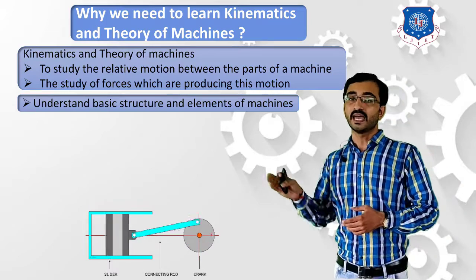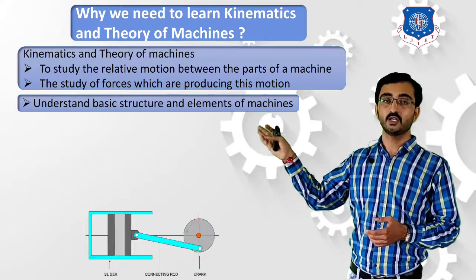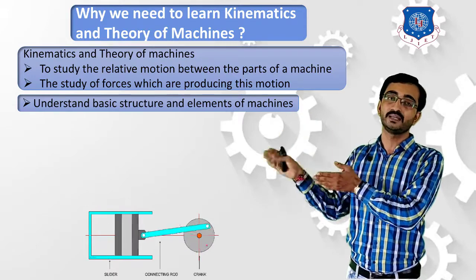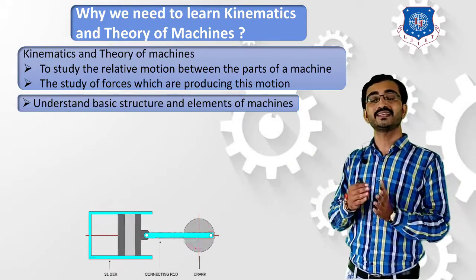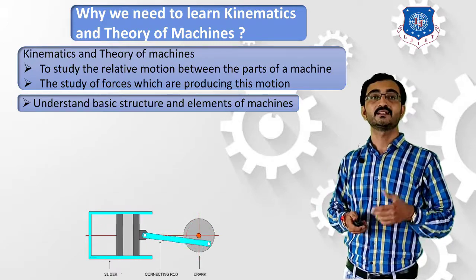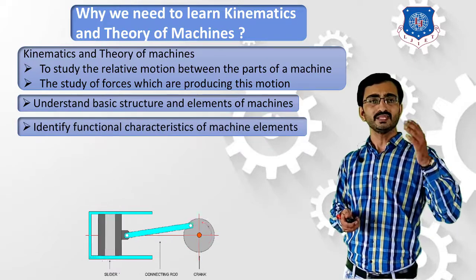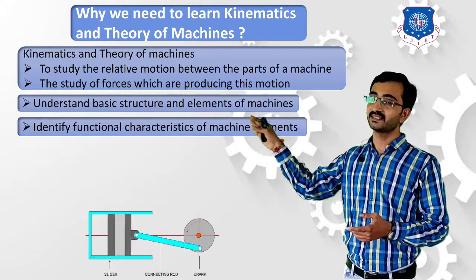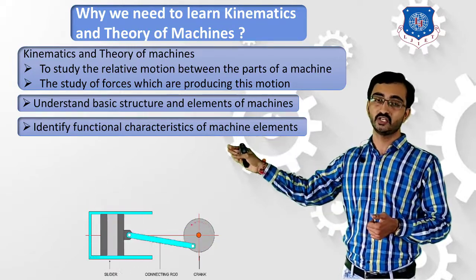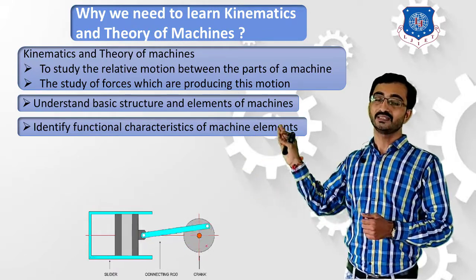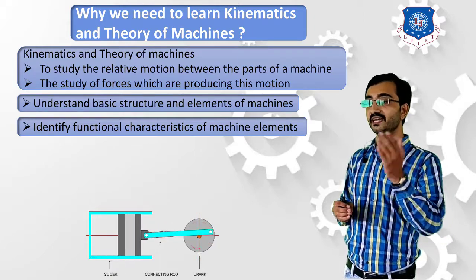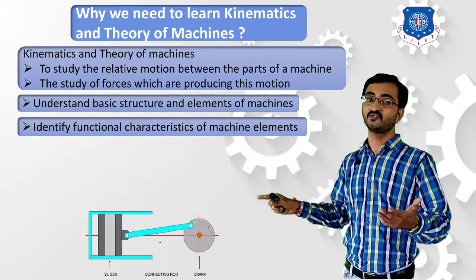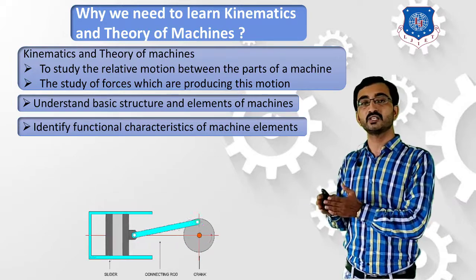In the IC engine example, there are various elements such as crank, connecting rod, piston, and cylinder. You will be able to understand what each component is termed and its behavior and function. The second output of this subject is the identification of functional characteristics of different elements. For example, we term a component a crank because it produces complete rotation — any component capable of complete rotation is known as a crank. In this way you will identify various functions of various elements.